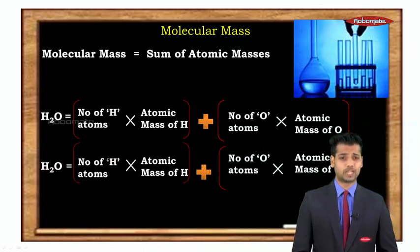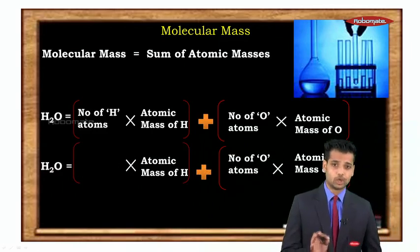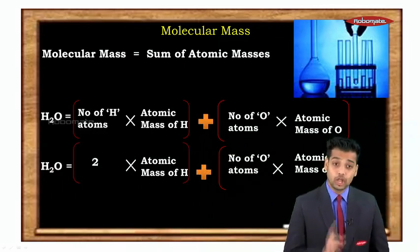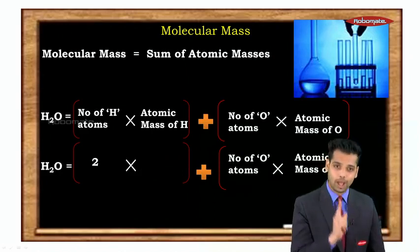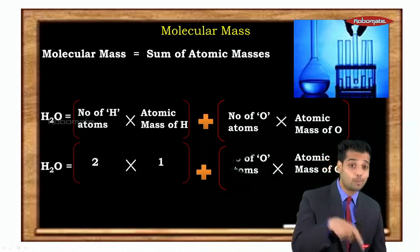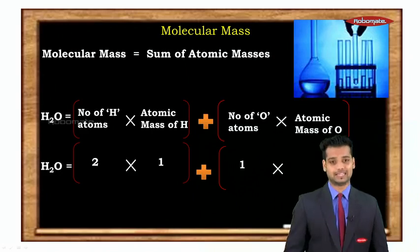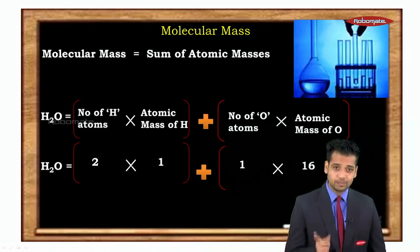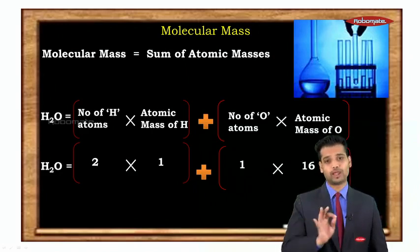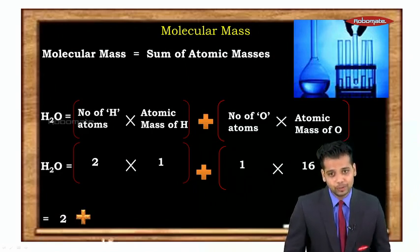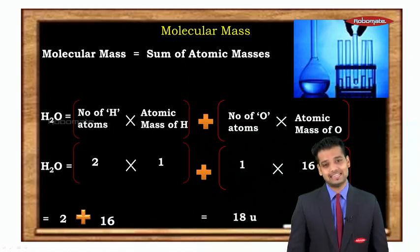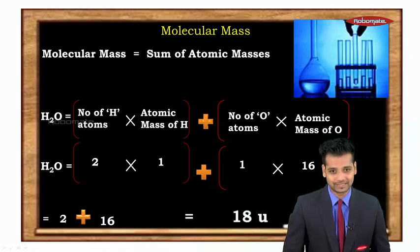So how many number of hydrogen atoms? There are two hydrogens. What is the atomic mass of hydrogen? One. What is the number of oxygen? One. And what is the atomic mass of oxygen? Sixteen. So instead of doing one plus one plus sixteen, you could do two into one plus one into sixteen. The answer would be two plus sixteen. That is eighteen unified mass.